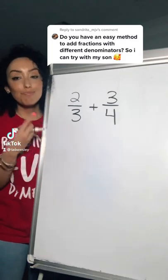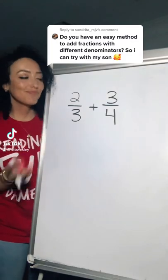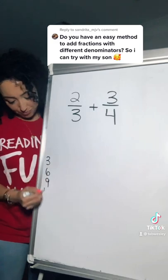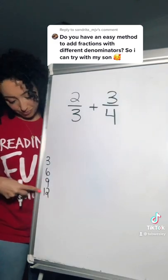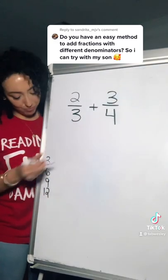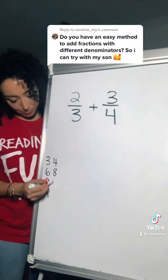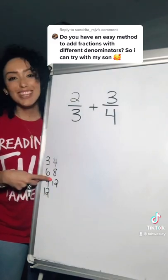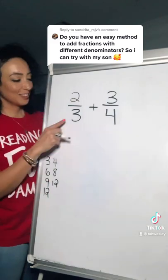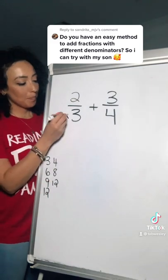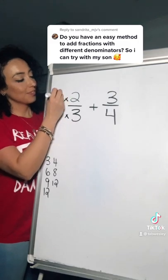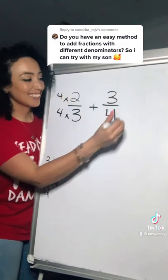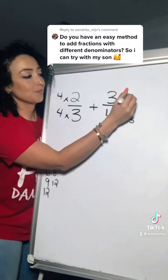We could do the butterfly, or we could find common multiples. Yep, 12. Multiply your denominators to make 12s. And whatever you do to the bottom, you have to do to the top.